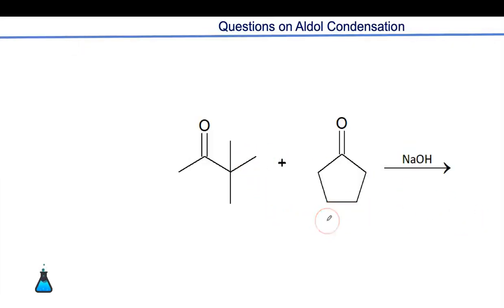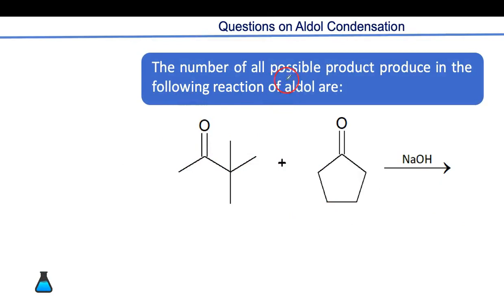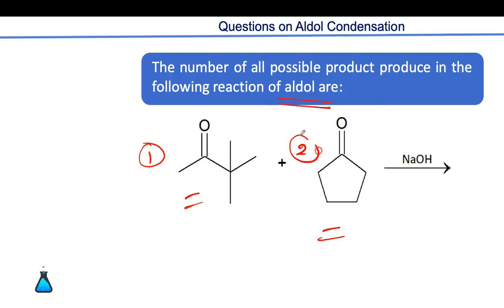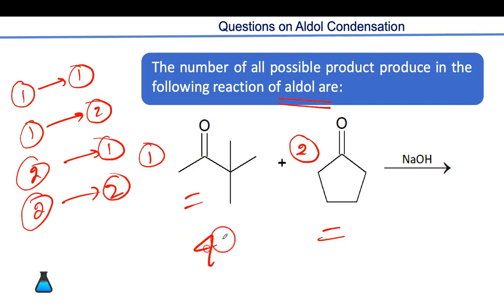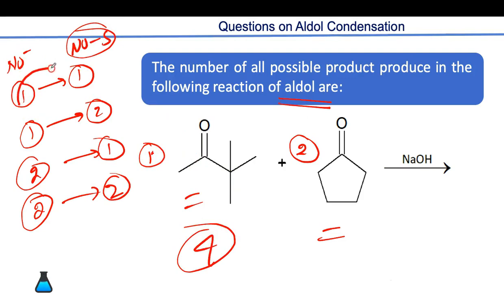Let's discuss a few questions on aldol condensation. If two different carbonyl compounds are reacted together, how many products form? Since the first can attack the first, first can attack the second, second can attack the first, and second can attack the second — four products are formed in total.